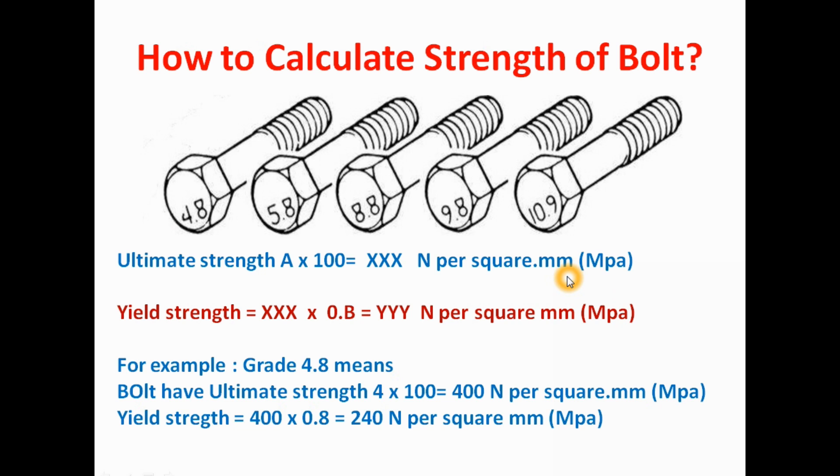These are our formulas. For calculating ultimate strength, we are using this formula. Here A is 4. So 4 times 100, we got 400 Newton per square millimeter. This is the ultimate strength.